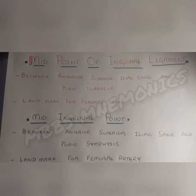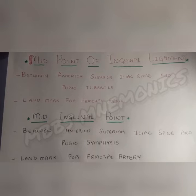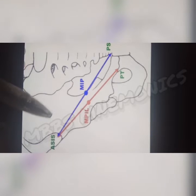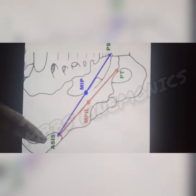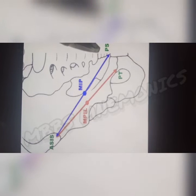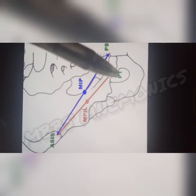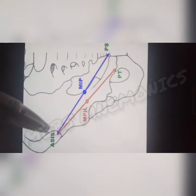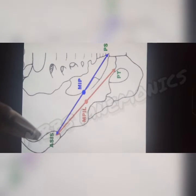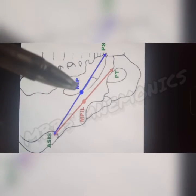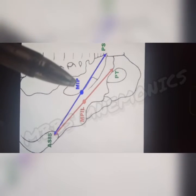Now I will explain this using a diagram as well. This is the anterior superior iliac spine — ASIS. This is the pubic symphysis — PS. And this is the pubic tubercle — PT. The halfway distance between the anterior superior iliac spine and the pubic symphysis is the mid-inguinal point, abbreviated MIP.